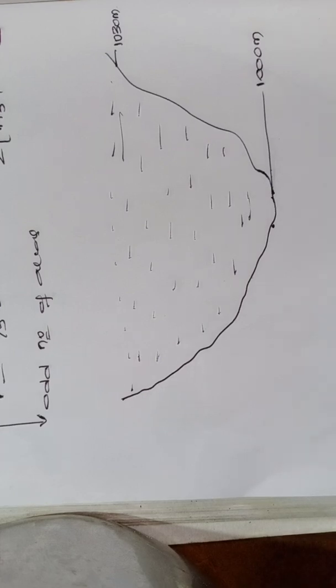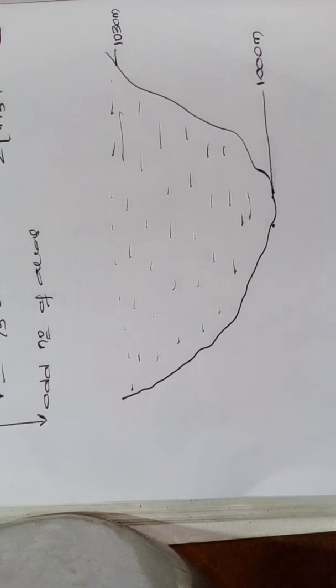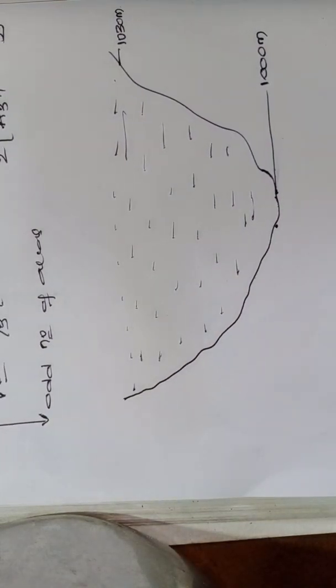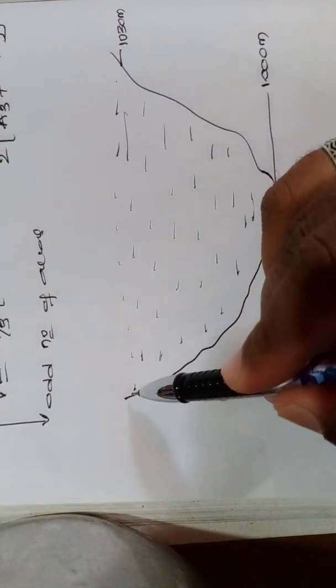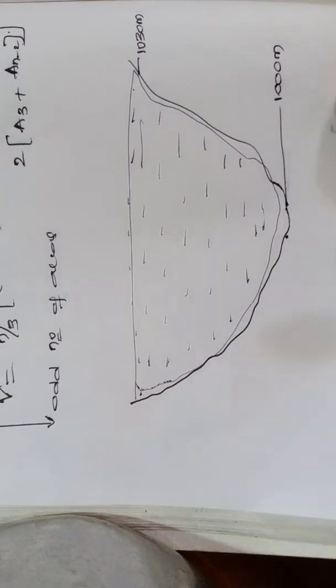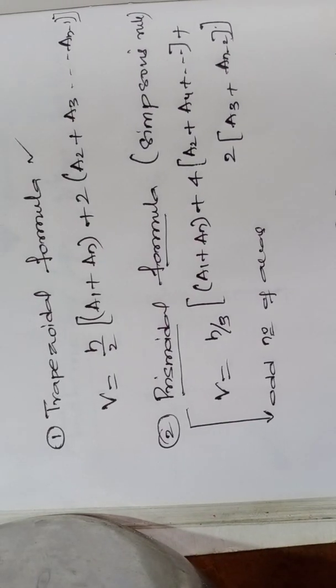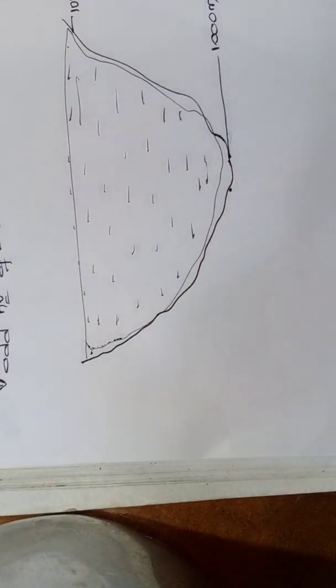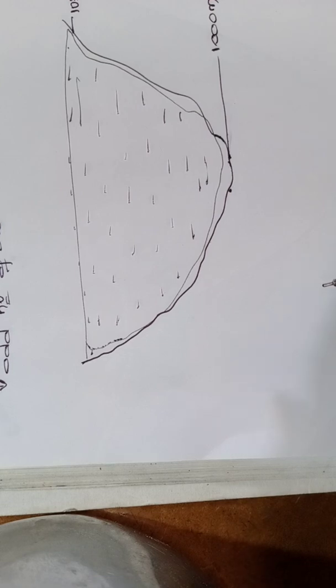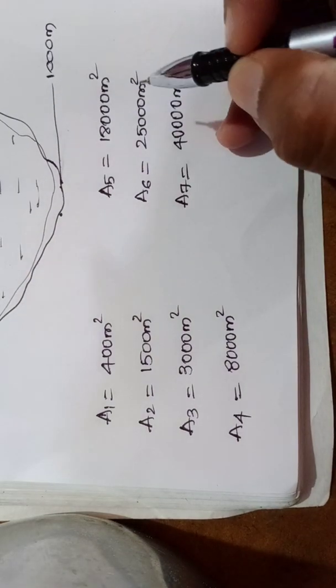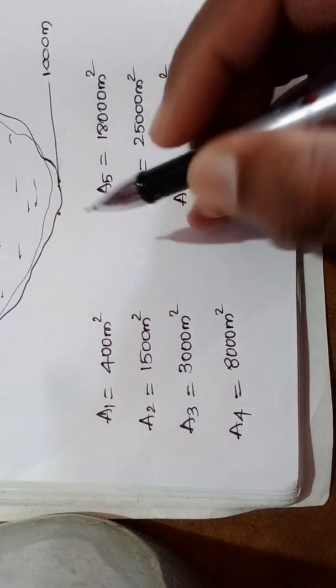You can see here this is the drawing based on the data available. To solve for the capacity, which is volume, we already discussed there are two formulas. Based on those two formulas you can calculate. I will write the areas. First of all, I will check whether these areas are suitable to use both formulas or not.